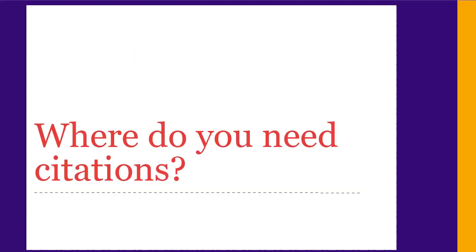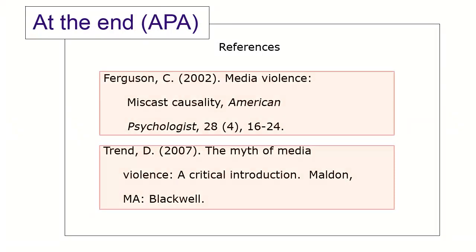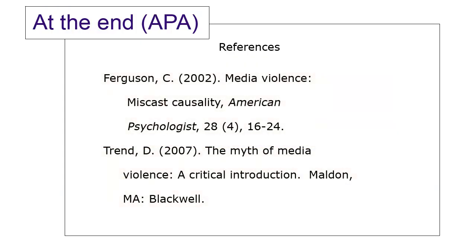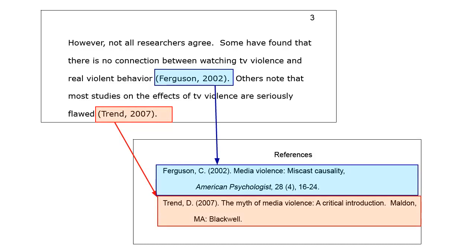First, where do you need to put citations? When you cite sources, your citation always needs to have two parts. The first part is in your paper, at the end of every sentence that uses a source — this is called an in-text citation. The second part is the list of all the sources you've used, which goes at the end of your paper and contains all the information needed to locate each source. The two parts work together: the in-text citations refer to the full information listed in the reference list at the end. You need both parts to cite correctly and avoid plagiarism.